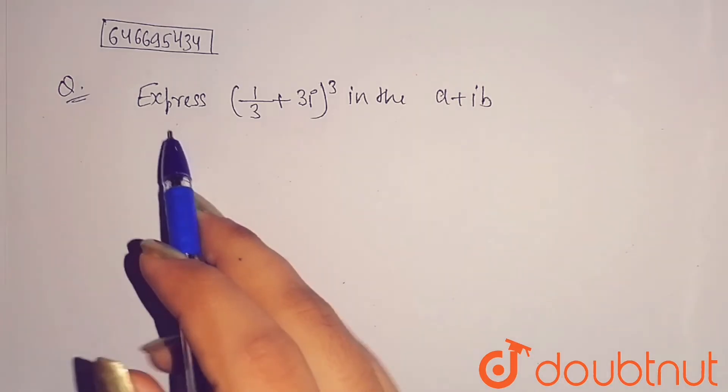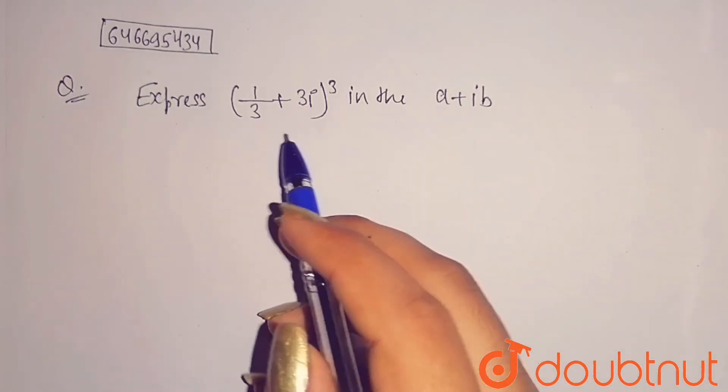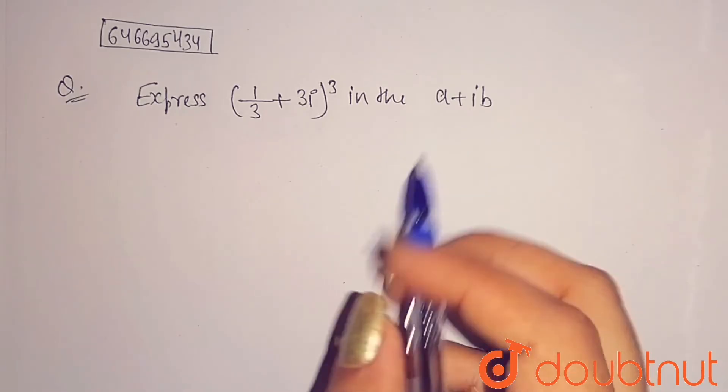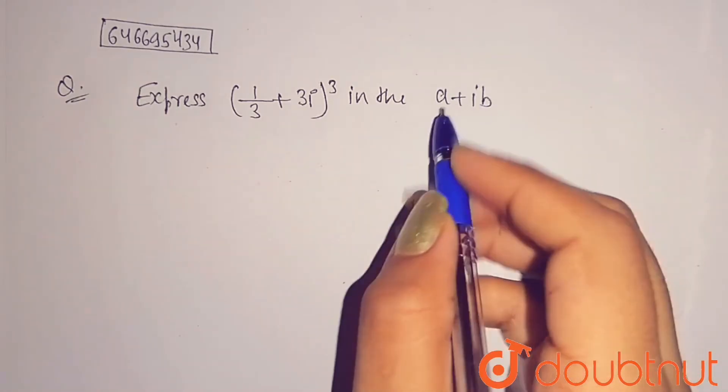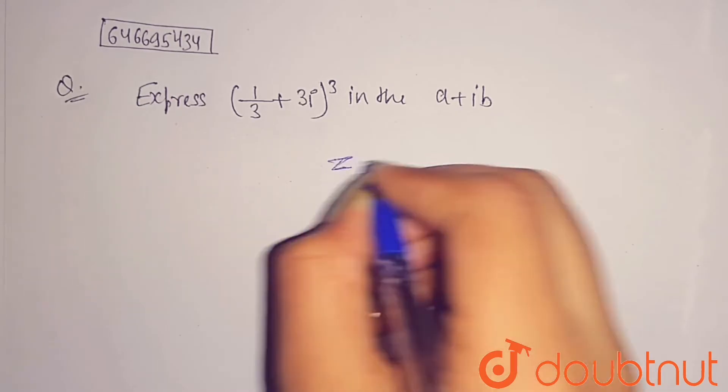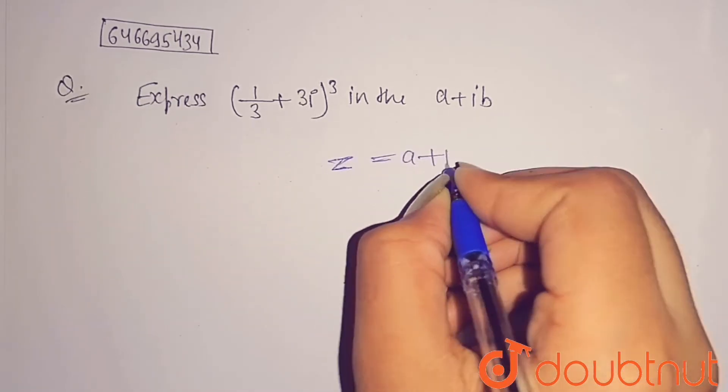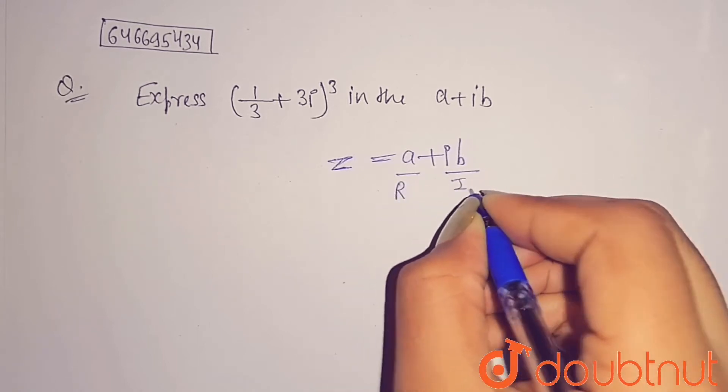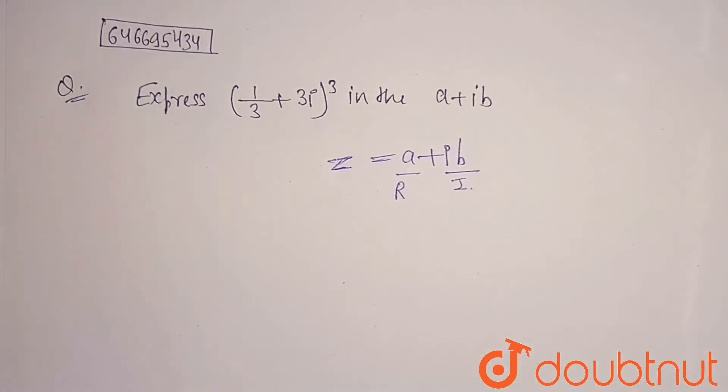It is given that express (1/3 + 3i)³ in the a + ib form. a + ib form is the basic complex number form, where this part is your real part and this part is my imaginary part. So we have to simplify this and express in this form.